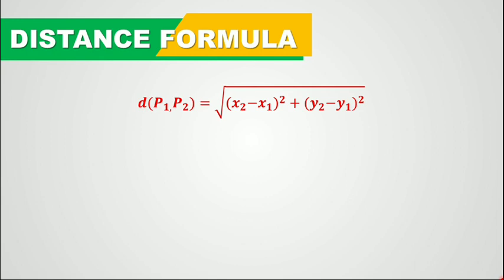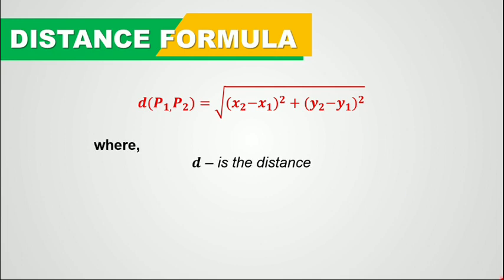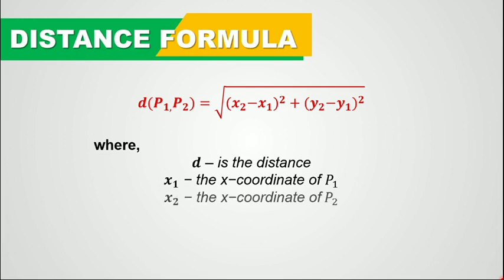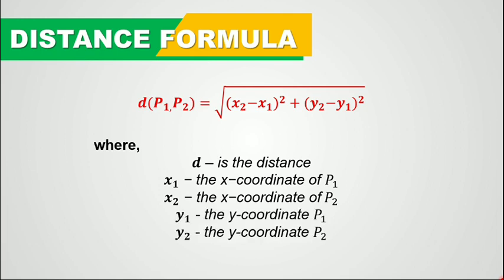The formula is: the distance between point 1 and point 2 is equal to the square root of quantity x sub 2 minus x sub 1 squared, plus quantity y sub 2 minus y sub 1 squared. Here, d is the distance, x sub 1 is the x-coordinate of point 1, x sub 2 is the x-coordinate of point 2, y sub 1 is the y-coordinate of point 1, and y sub 2 is the y-coordinate of point 2.